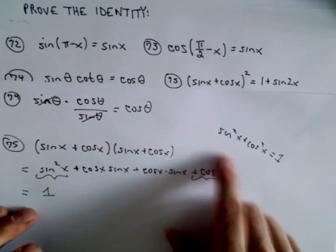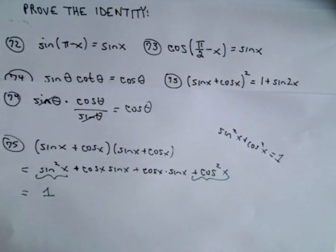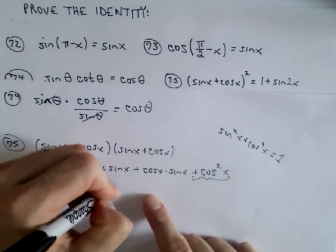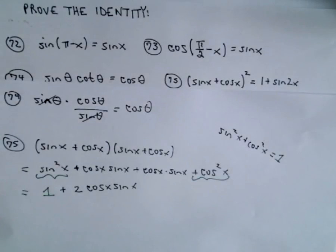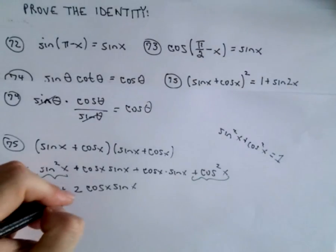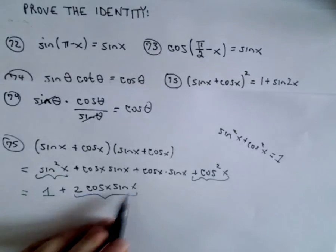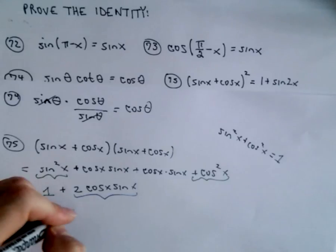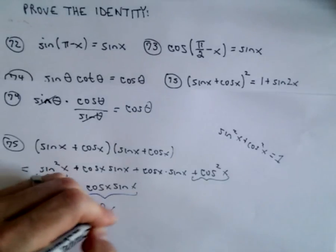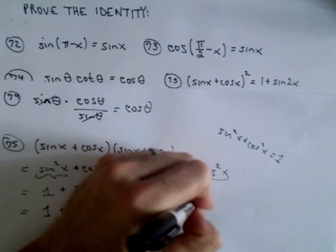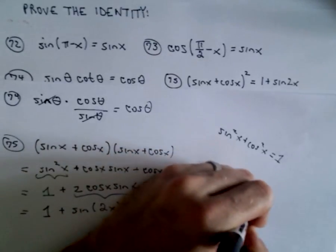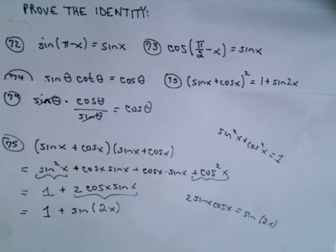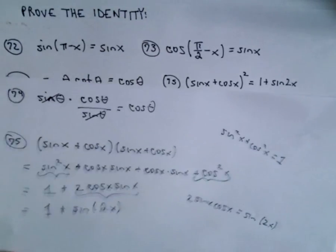So recall the identity that sin² + cos² equals 1. If you only know one trig identity, I would say that's the one to know. And then we're going to have plus 2 cos x sin x. And yet again, another identity that you want to know: 2 cos x sin x, or equivalently 2 sin x cos x, you can simply write that as sin(2x). So another important identity. So 2 sin x cos x equals sin 2x. All right.